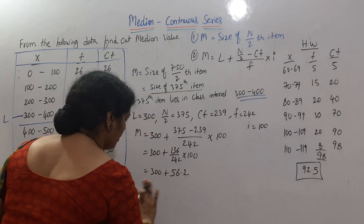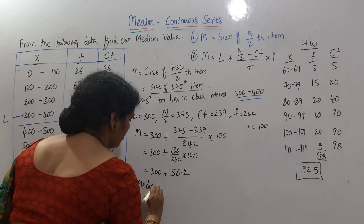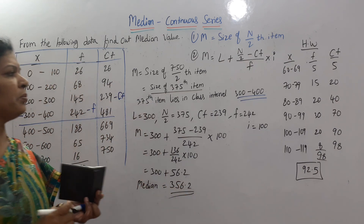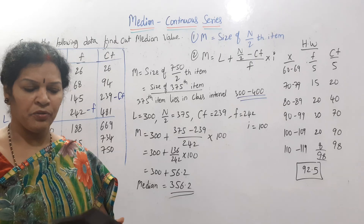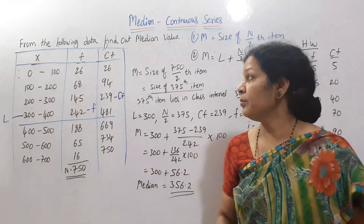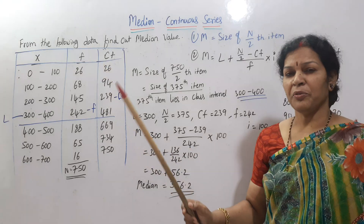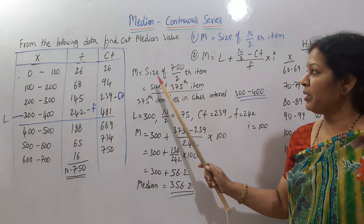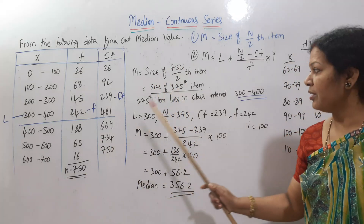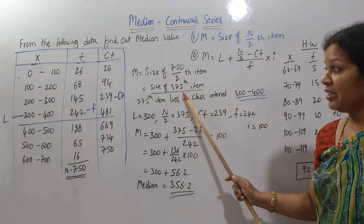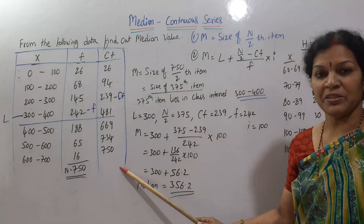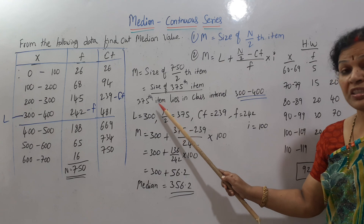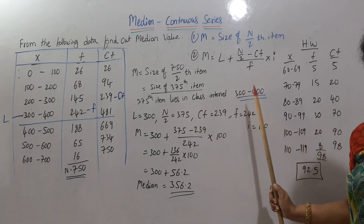Median is equal to 356.2. Let me explain — no confusion here. This is not a problem with cumulative frequency; we will adjust it. Then step number 1: size of n/2 th item. N is 750, so 750 by 2 is 375. The 375th item lies in cumulative frequency 481. Underline that row. The 375th item lies in class interval 300 to 400.